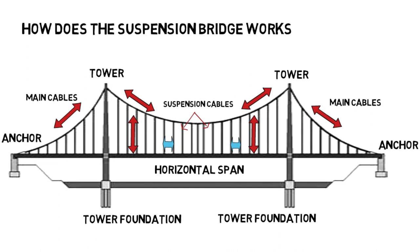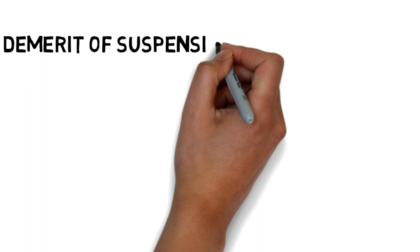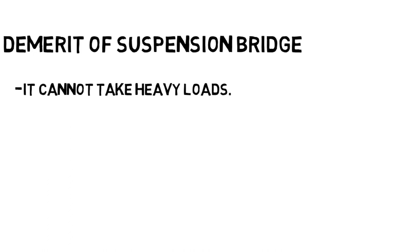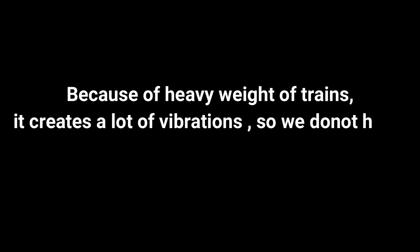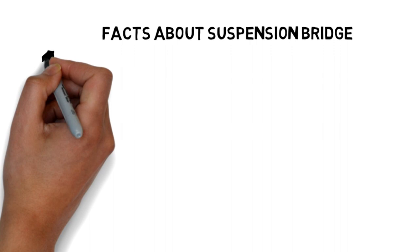Now we have the demerits of suspension bridges. It cannot take heavy loads. Flexibility becomes dangerous during high-speed winds. It cannot be built on soft foundations as the compression force is high at the foundation. Because of the heavy weight of trains, it creates a lot of vibration, so we do not have suspension bridges for railways.